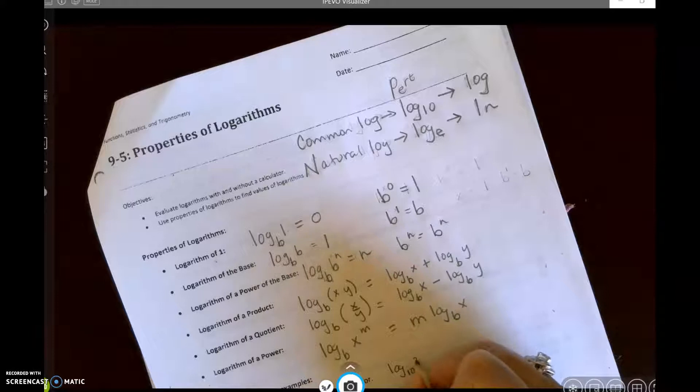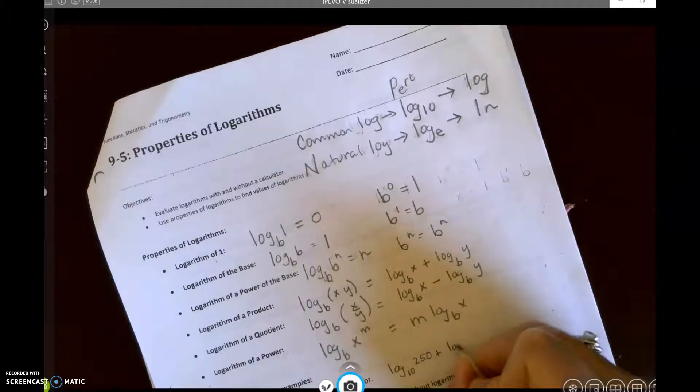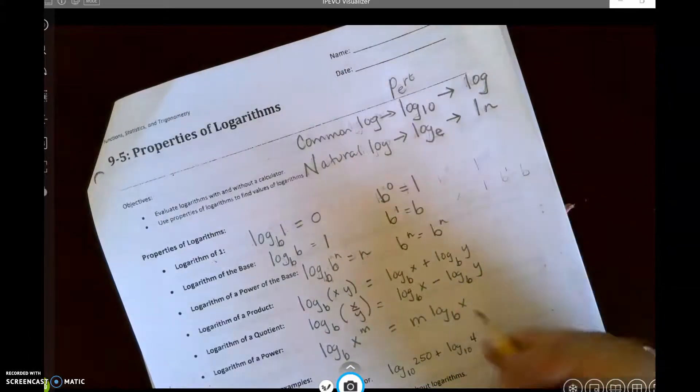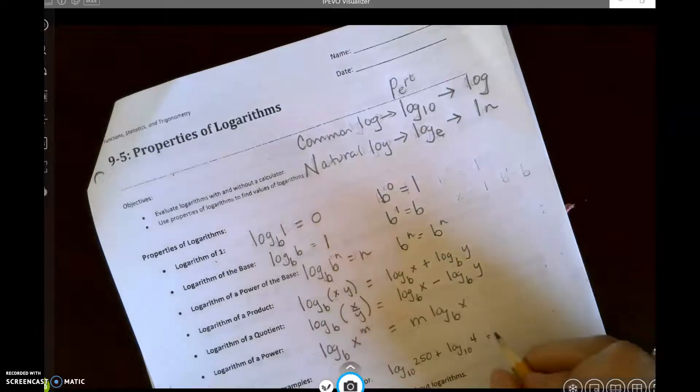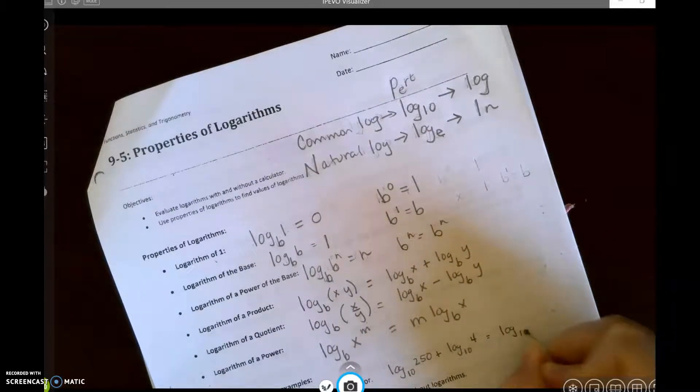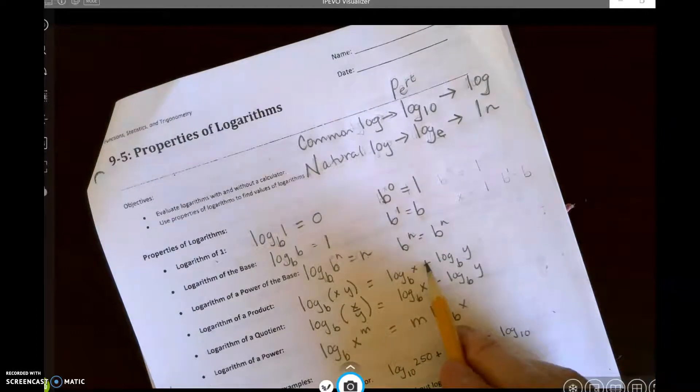So we have log base 10 of 250 plus log base 10 of 4. Notice they have the same base. So since they have the same base, we can write it as log base 10.